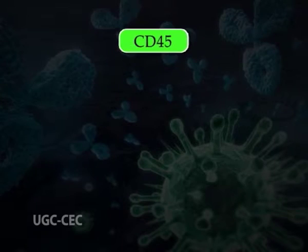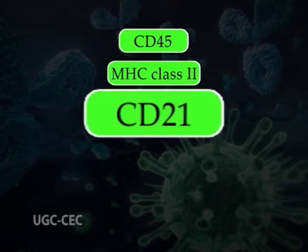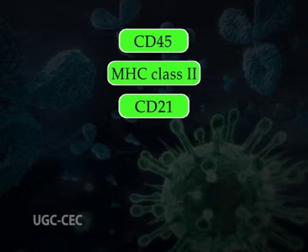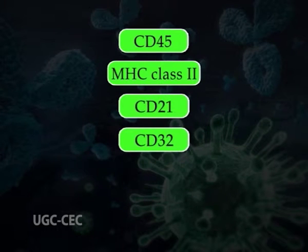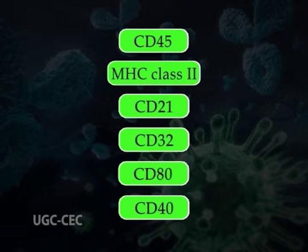Mature B cells express many other molecules on the cell membrane. Some of the important proteins present on the membrane of B cells besides antibody are CD45, MHC class II, CD21, CD32, CD80, and CD40.